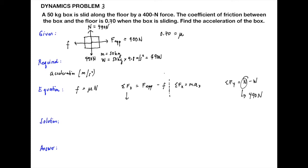Dividing both sides by 50 kilograms: 57 Newton divided by 50 kilograms equals 1.14 meter per second squared. Since 50 has one significant figure, the final answer rounds to 1 meter per second squared.